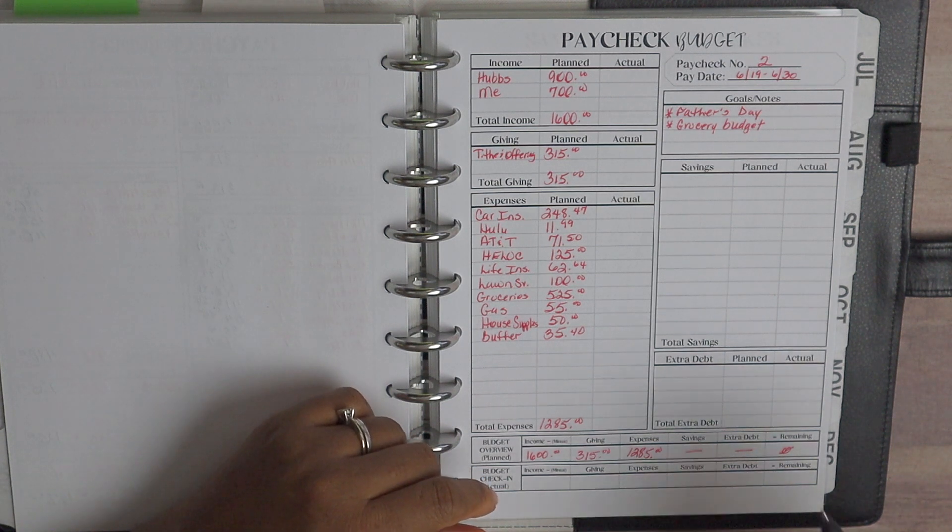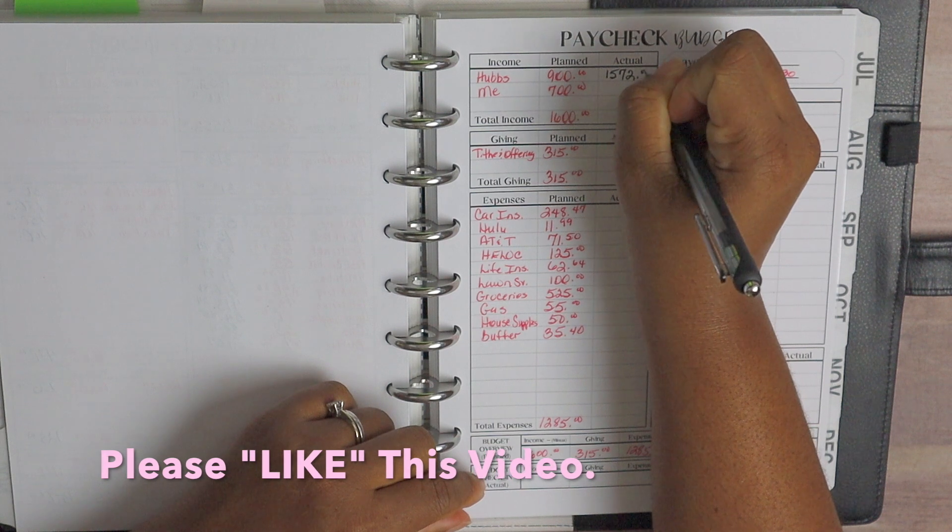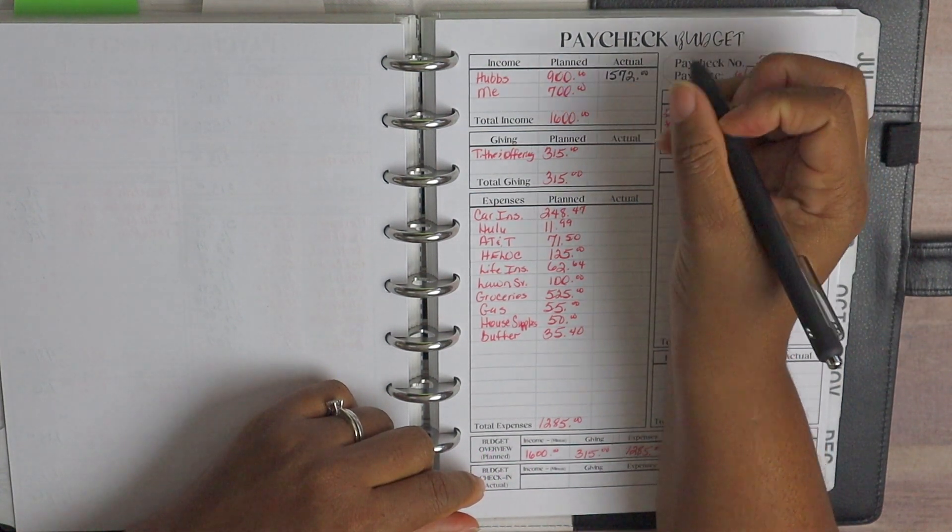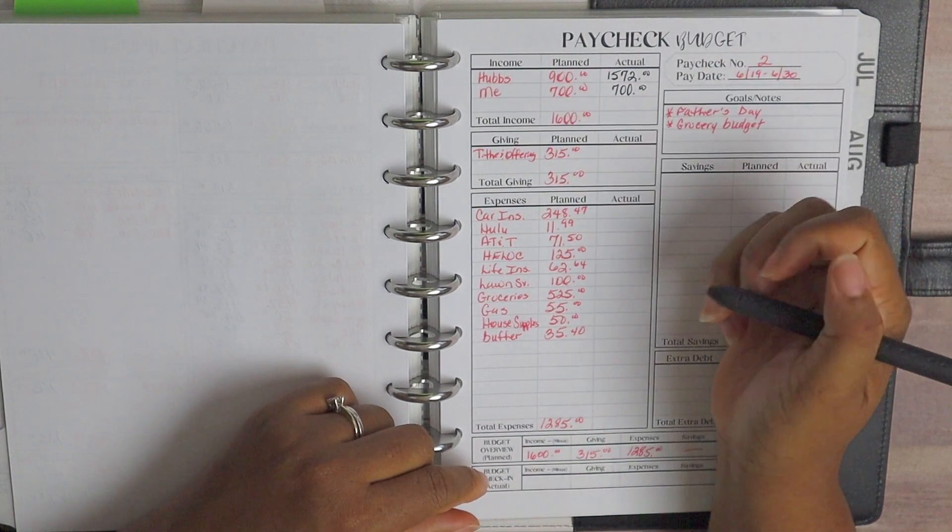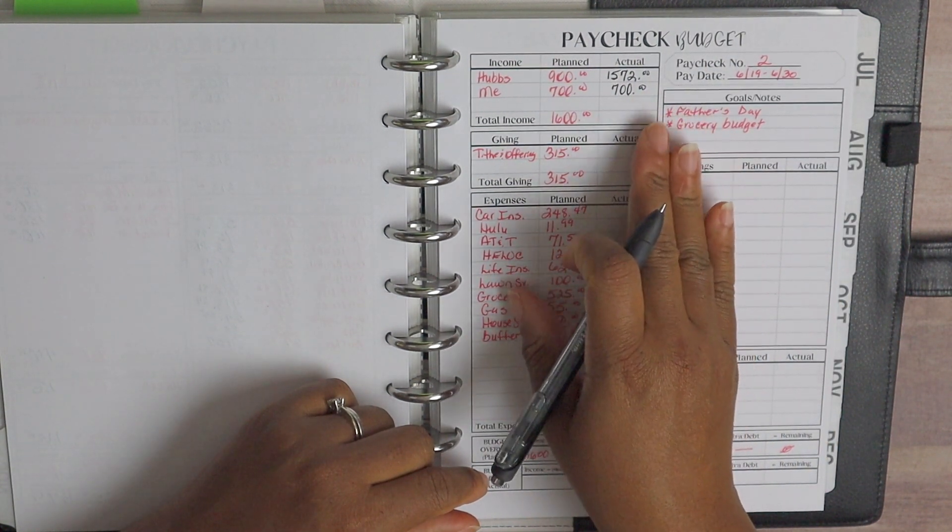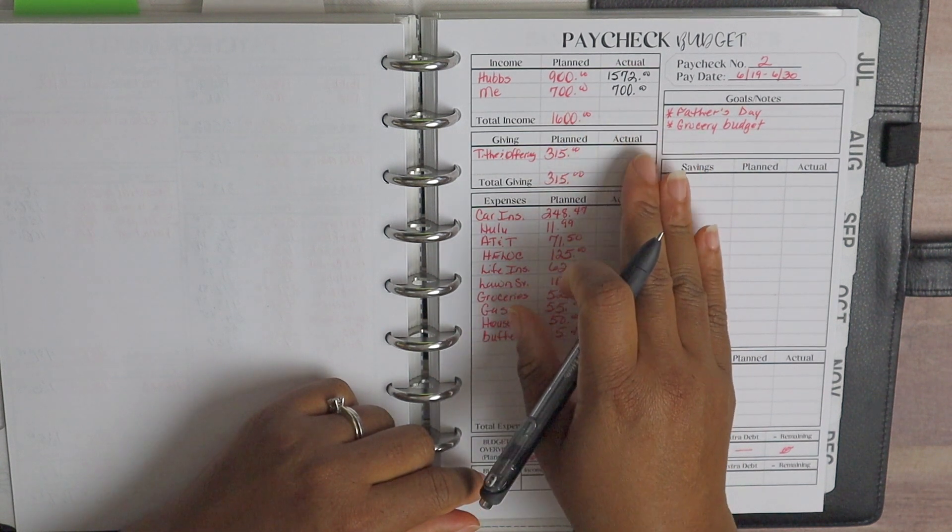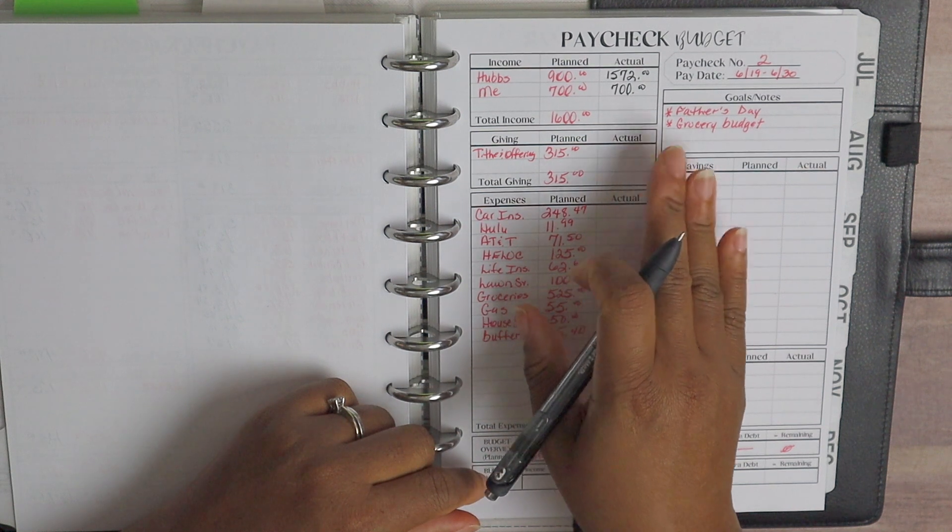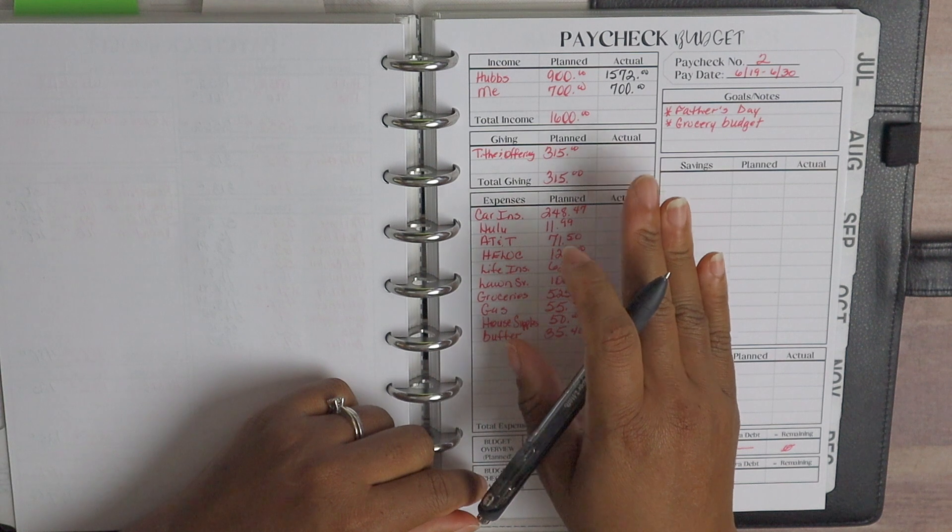And of course for me, $700 was deposited into this account. Now if this is your first time watching one of our videos, my husband and I allocate a portion of our paychecks direct deposit into this joint household account and we pay our bills out of the joint household account and we do still have our personal account.